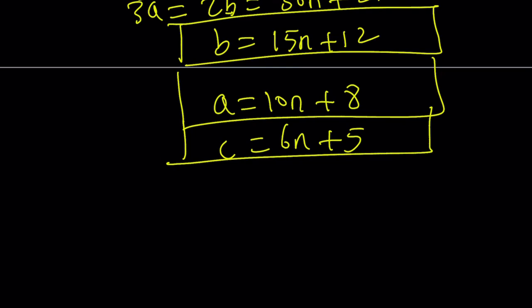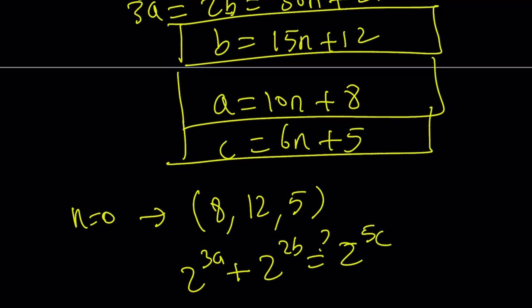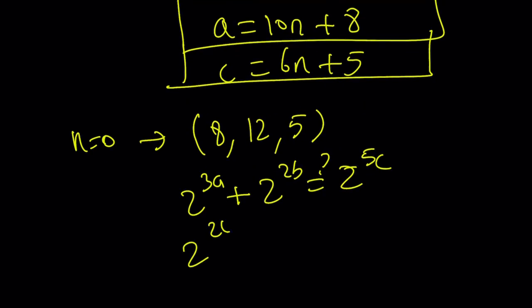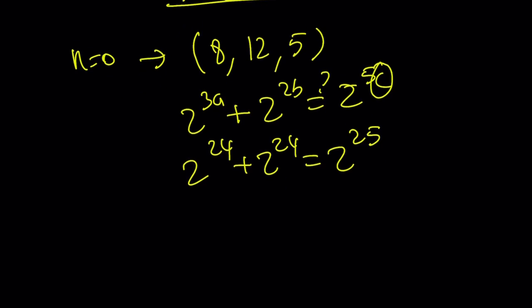Let's just find one and test it. For example, if n is equal to 0, then from here you get a equals 8, b equals 12, and c equals 5. And is it true that 2 to the power 3a plus 2 to the power 2b equals 2 to the power 5c? Let's see. 2 to the power 24 plus 2 to the power 24 equals 2 to the power 25. And yes, that's true for c equals 5. So 8 comma 12 comma 5 is a possible solution to this equation.